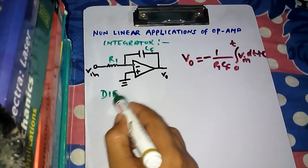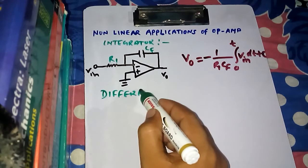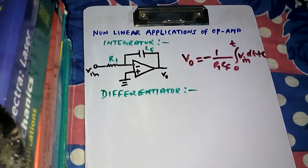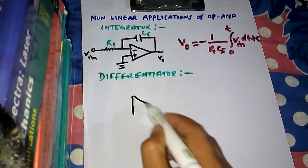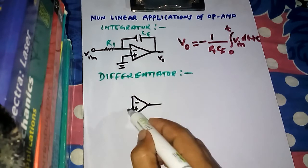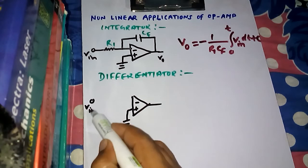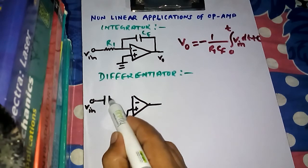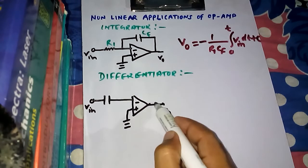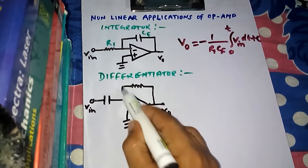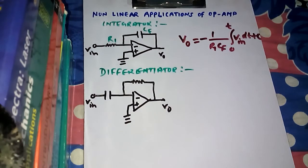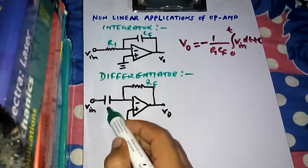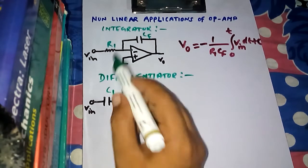Next we move to the differentiator circuit. We draw the standard differentiator: there is an op-amp with negative and positive terminals; the positive terminal is grounded. The input voltage is given to the negative input terminal through a capacitor. From the output there is a feedback circuit through a resistor, named R-F (R-F for feedback resistance). The capacitor is named C1, just as I named the resistor R1 in the integrator.